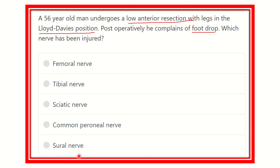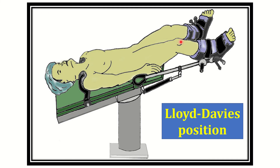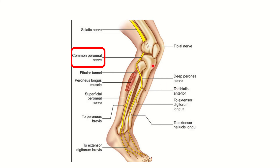We have to find out which nerve may get damaged and cause foot drop. In the Lloyd Davis position, the knee is flexed. The common peroneal nerve is one of the nerves arising from the sciatic nerve. The sciatic nerve divides into the tibial nerve and the common peroneal nerve. The tibial nerve passes directly posteriorly, so there is no risk of compression during flexion of the knee joint.